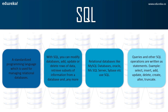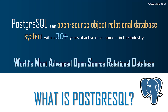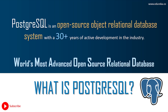Now that you know what SQL is, let's look into the main topic: what is PostgreSQL? PostgreSQL is an open-source object-relational database system with 30+ years of active development in the industry. If you have to understand PostgreSQL, it is basically a language through which you can handle open-source relational database systems. PostgreSQL is the world's most advanced open-source relational database. To summarize: it is open source and it is used for handling databases in the form of an object-relational database system — where data is relational but the system is object-oriented.